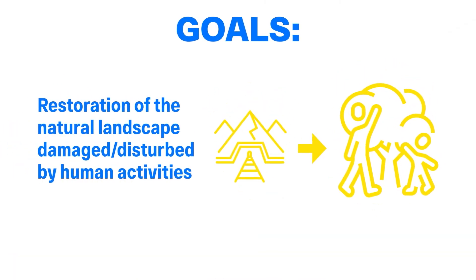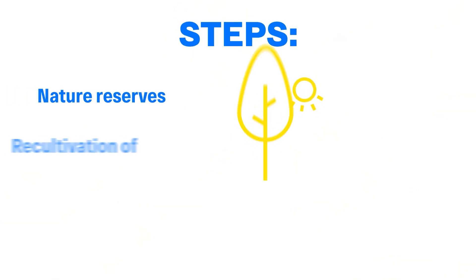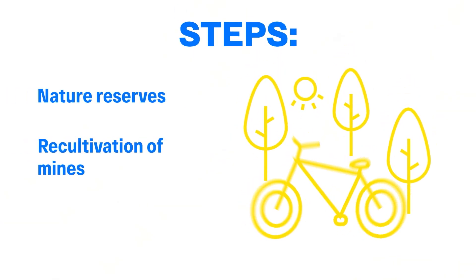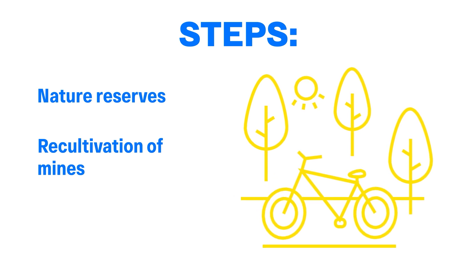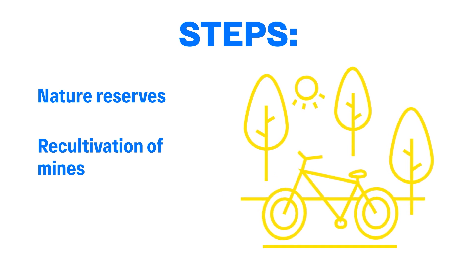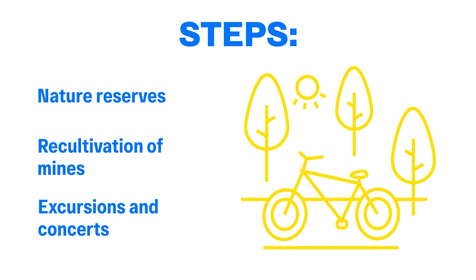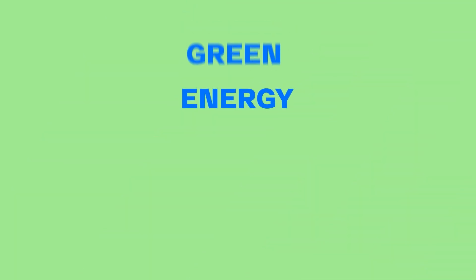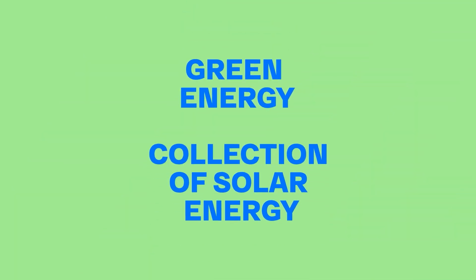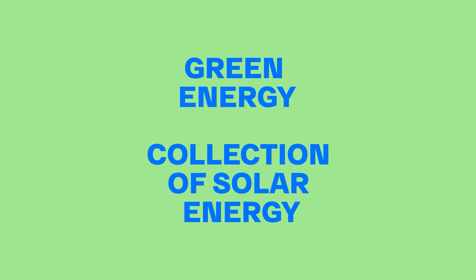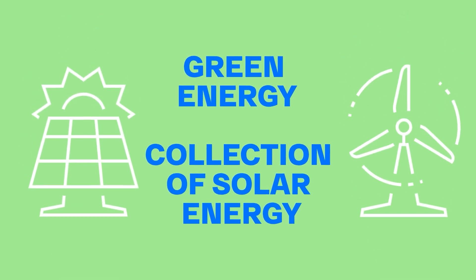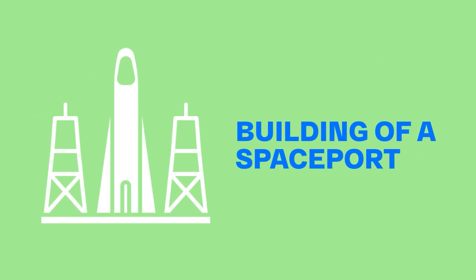Steps: Switch to electric transport for municipal services and public transport; installation of electric chargers; develop and implement the use of each electric car to balance the power grid; restriction on the entry of cars with internal combustion engines. Re-cultivation of natural areas — goal: restoration of the natural landscape disturbed by human activities. Steps: creation of nature reserves; re-cultivation of mines by filling them with safe waste; creation of historical sites and green energy collection of solar energy at each man-made object.